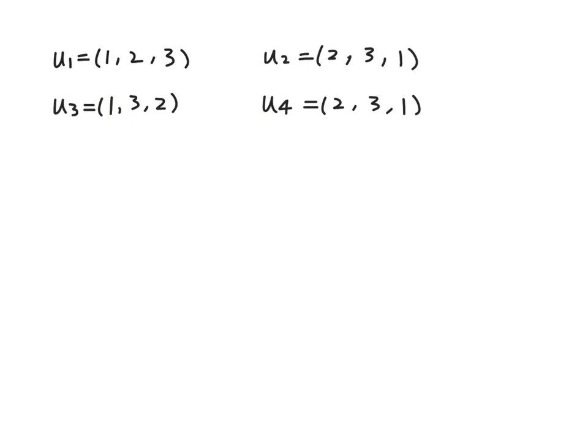So all four vectors have three components, but only u2 and u4 have the same corresponding entries. So the equal vectors are u2 and u4.